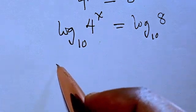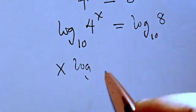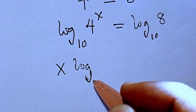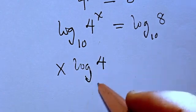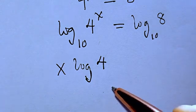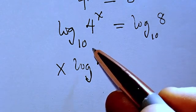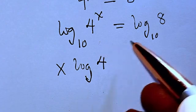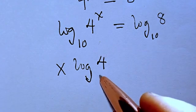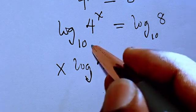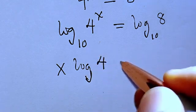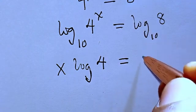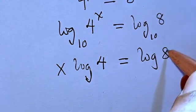So this x will come down. We have x log 4. We don't even need to put the base 10 here. When we leave it like this, it's the same thing as putting the base. So we have log 8.